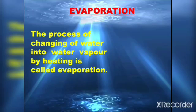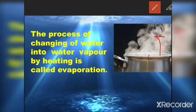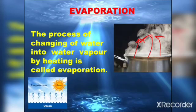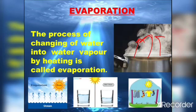Evaporation: when water changes into water vapor by heating, that process is called evaporation. When we boil water, the water changes into water vapors — that process is called evaporation. Evaporation is taking place all the time in all water bodies. If you keep a glass of water outside, you will observe that after some time the water level goes down due to evaporation by the heat of the sun. When you keep your wet clothes outside, after some time the clothes dry up, and that is due to evaporation.